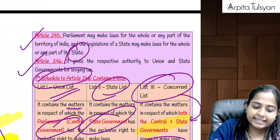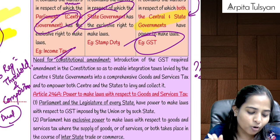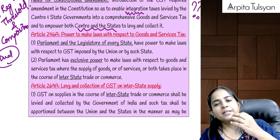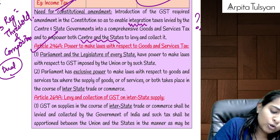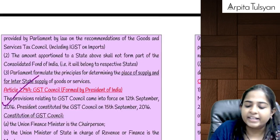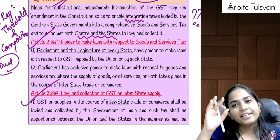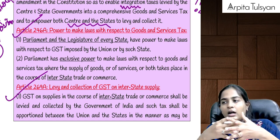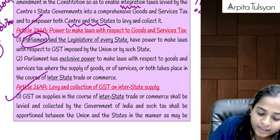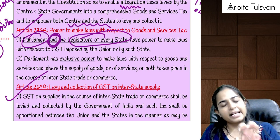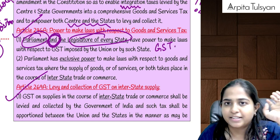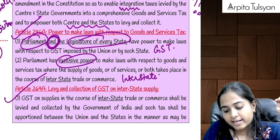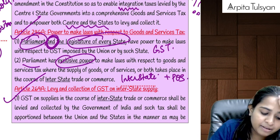Why do we need amendment? Because we wanted to integrate and give powers to both center and state. For that, they added three articles: Article 246A, Article 269A, and Article 279A — only for the purpose of GST. Article 246A says that for GST, powers have been given to Parliament as well as the Legislature of the State — dual powers are given to both together to make all laws relating to GST. But exclusive powers relating to interstate supply and place of supply matters have been given to Parliament — that decision will be taken exclusively by the Central Government.